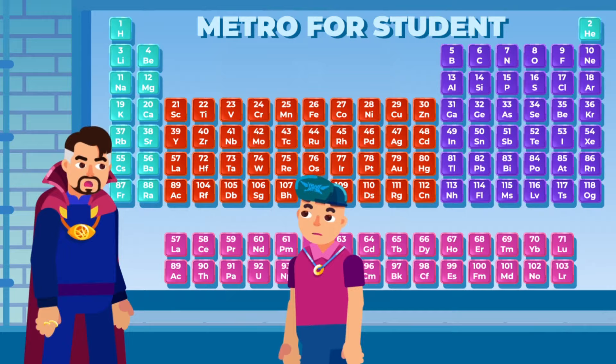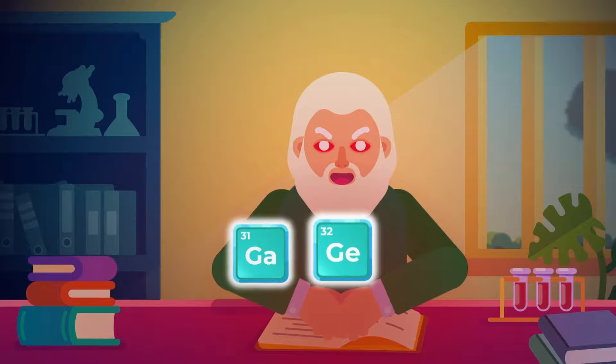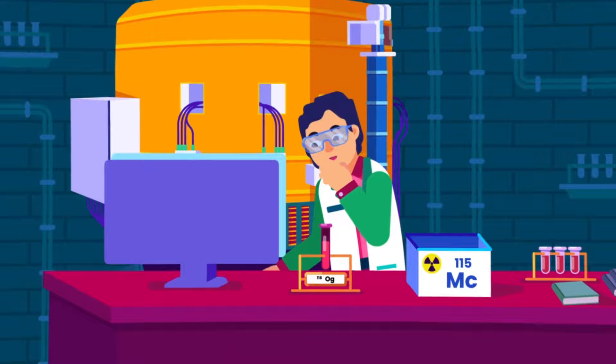And although this wasn't known at the time, this was because the elements in the same group have the same number of electrons on the outer shell. Mendeleev was predicting all of this without even knowing about electron arrangements — the guy was a genius.